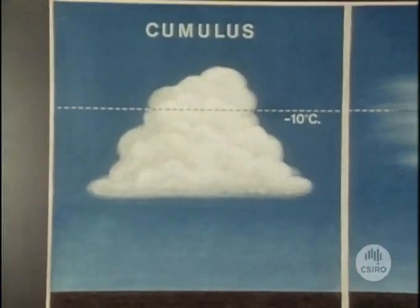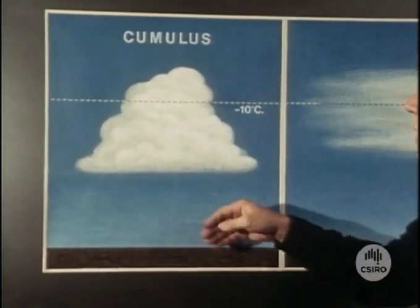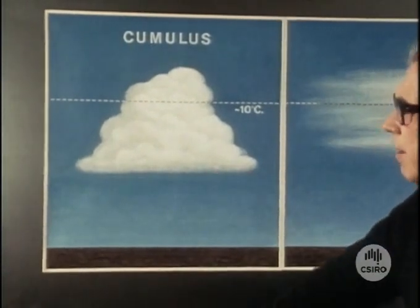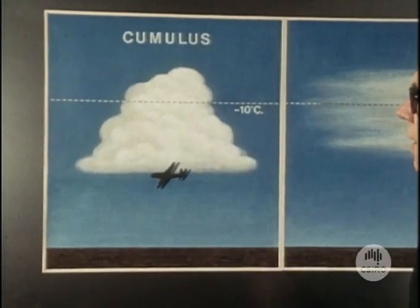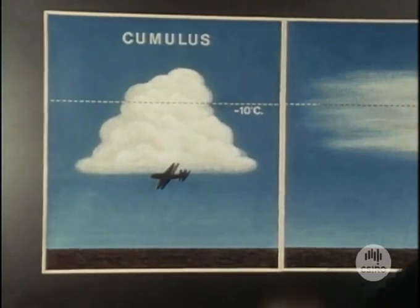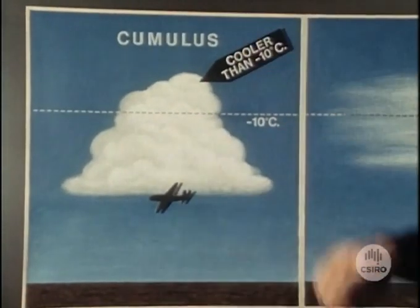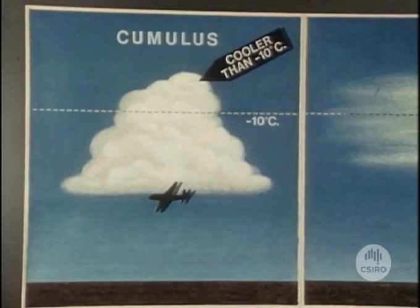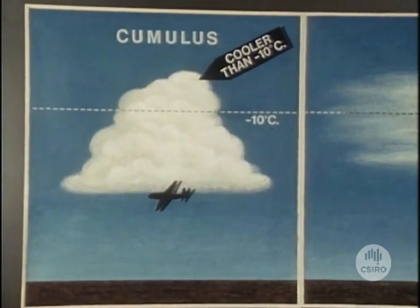These trials gave much the same results as with dry ice. When conditions were suitable, the seeded clouds gave several times more rain than the unseeded clouds. But much less silver iodide was needed, and it was not necessary to climb above the cloud. With cumulus clouds, which are formed in rising currents of air, the smoke can be released at the base in the upcurrents and is soon distributed throughout the rest of the cloud. And if the temperature at the top of the cloud is cooler than minus 10 degrees centigrade, then rain usually falls about 20 minutes later.